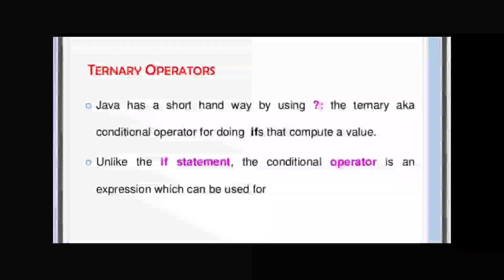Today our main focus is the ternary operator, which we also call the conditional operator. The name 'ternary' tells you there will be three values. It gives either true or false depending upon the relational condition — it is also a boolean data type. Rule one: it uses boolean data type. Rule two: it compares two expressions, and whichever is correct gets displayed. If the first condition is correct, that answer comes; if the second condition is correct, that answer comes — Java handles this automatically.